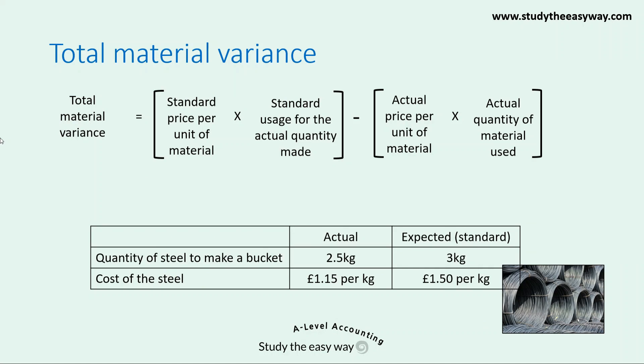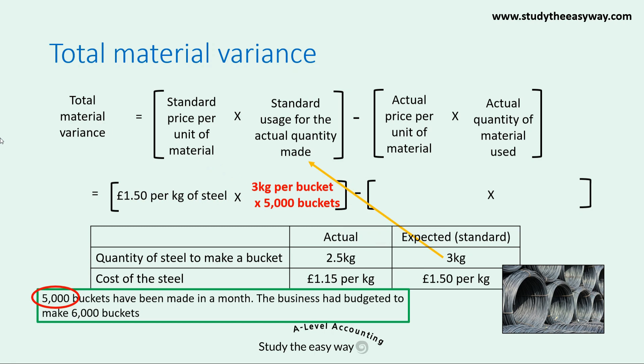Putting numbers into the formula: the standard price per unit is £1.50 per kilogram. The standard usage for the actual quantity made is 3 kilograms per bucket multiplied by 5,000 buckets actually made. Please note carefully — a lot of people make mistakes here and use the budgeted quantity of 6,000 buckets, but that's not correct. In this formula, it's the standard usage for the actual quantity made, which is 5,000.